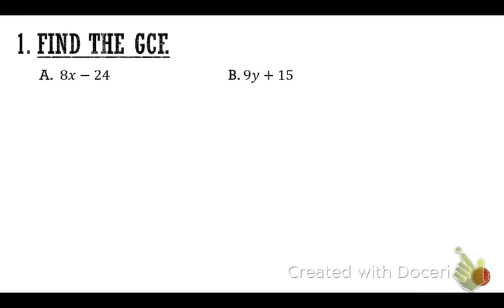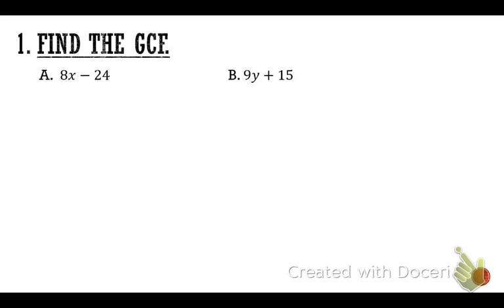We're going to use those steps to help us find the GCF. Step one says choose the smallest number. Out of 8 and 24, the smallest number is 8. Step two: list the factors of 8. One times eight, two times four — those are the factors of eight.